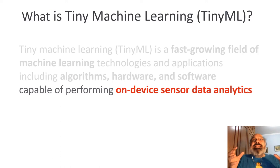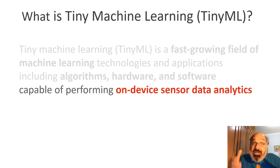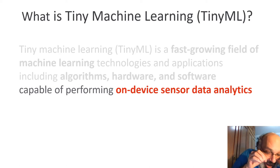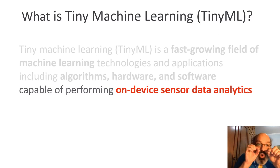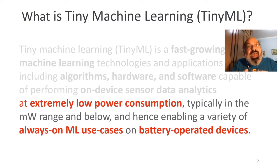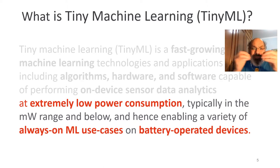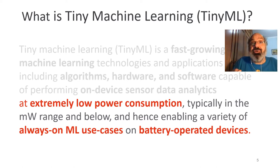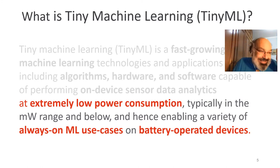The important thing about TinyML is that we have machine learning — part of artificial intelligence — running on device, running exactly where things happen. It's connected to the physical world. The big challenge is that machine learning works with a very, very small amount of power, with small batteries, and in devices with only a few kilobytes of memory. This is the big challenge.